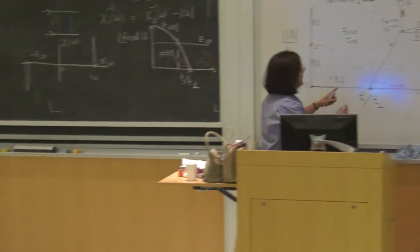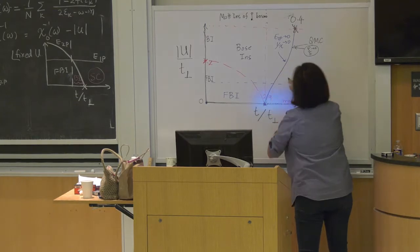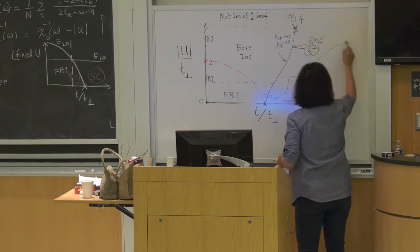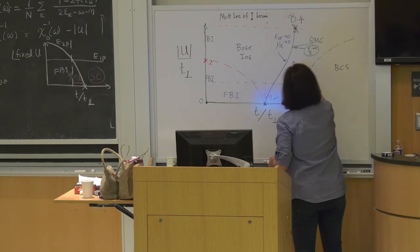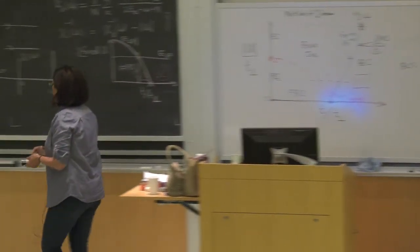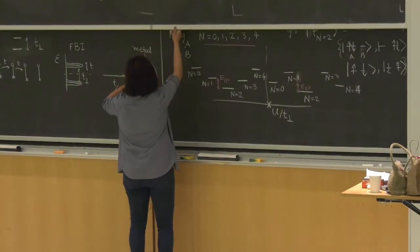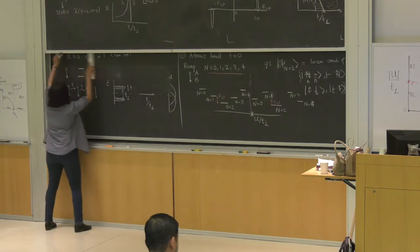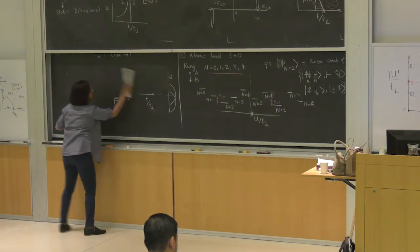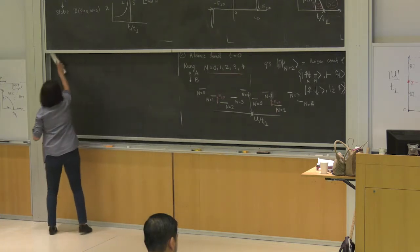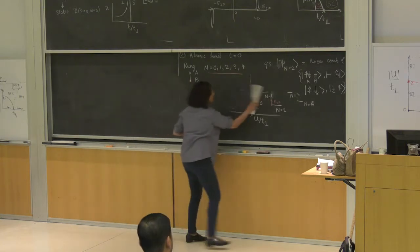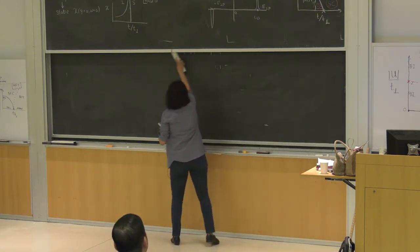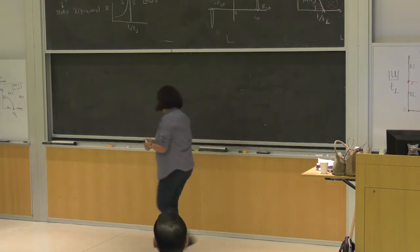Now the main second part I wanted to show you is on the excitations on the superconducting side. The superconductor has also a crossover within it, from BCS to BEC, and that crossover has a boundary. The way we see that boundary is through the excitation spectrum.